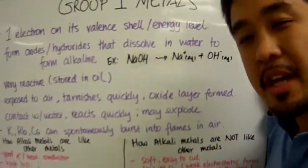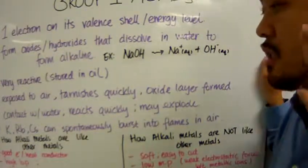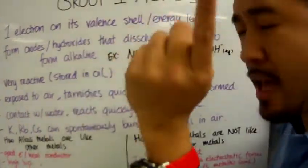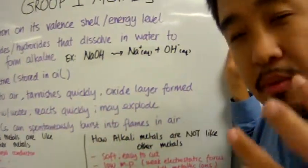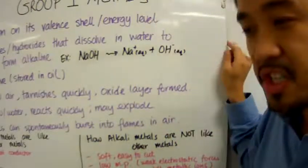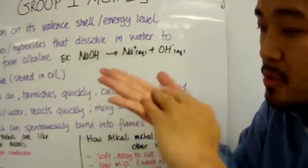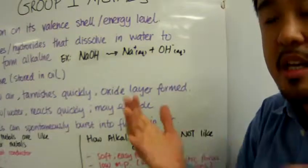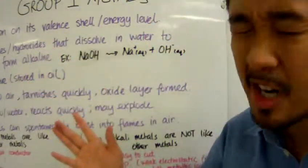Like all metals, group 1 elements corrode. When exposed to air, they tarnish very quickly because of the oxide layer that forms. When you cut a fresh slice of a group 1 element, you'll see a silvery, shiny surface. Leave it out for a few moments—boom!—dark and gray.